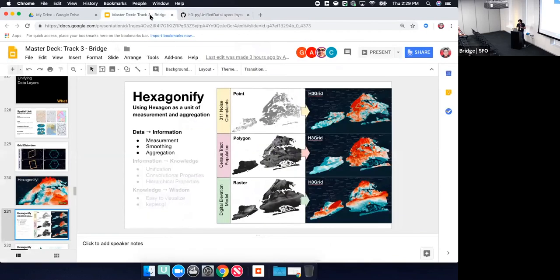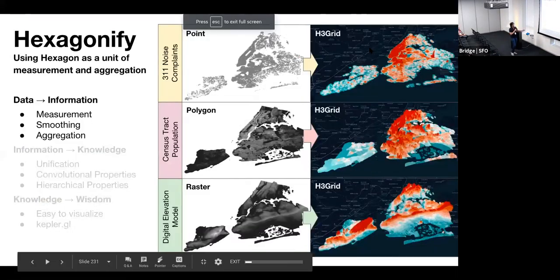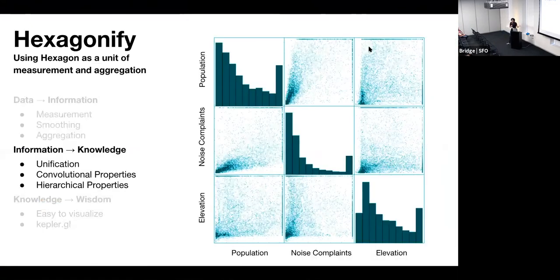So back to what I was presenting. You can take any of these layers of data and just take it from point to hexagon, polygon to hexagon, raster to hexagon, and then you unified all of your data. What do you do? You can do more, the second step, which is information to the knowledge. You can do unification which is what I was just explaining here, finding out what is the relationship.